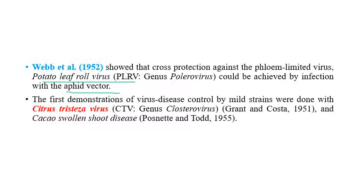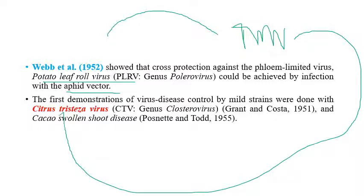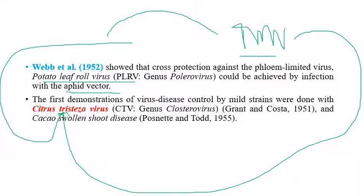The first demonstration of virus disease control using mild strains was with citrus tristeza virus. Although the cross protection mechanism was originally developed for tobacco mosaic virus, it is now most heavily employed commercially for citrus tristeza virus. Cross protection has also been applied to coconut swollen shoot disease and insect-vector-transmitted plant viruses.